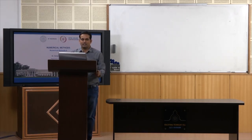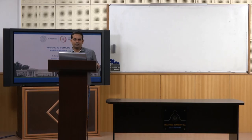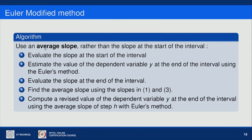Now I will explain Euler's modified method, which is an improvement of Euler's method discussed in the earlier lecture. In this method we use an average slope rather than the slope at just the start of the interval. The steps are: evaluate the slope at the start of the interval; estimate y at the end of the interval using Euler's method; evaluate the slope at the end of the interval; find the average slope; and compute a revised value of y at the end using the average slope.